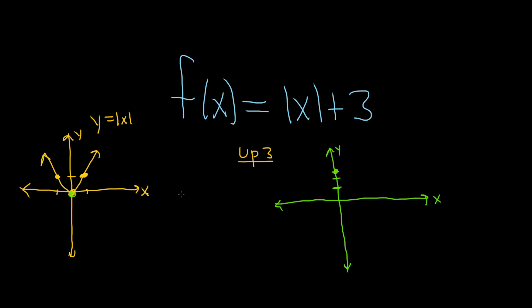Now if you want it to be precise, from where it starts it's right 1, up 1. So you can go right 1, up 1, put a dot, then left 1, up 1, put a dot, and draw your V just like that. Just know that it's always right 1, up 1 and left 1, up 1 from where the V starts.